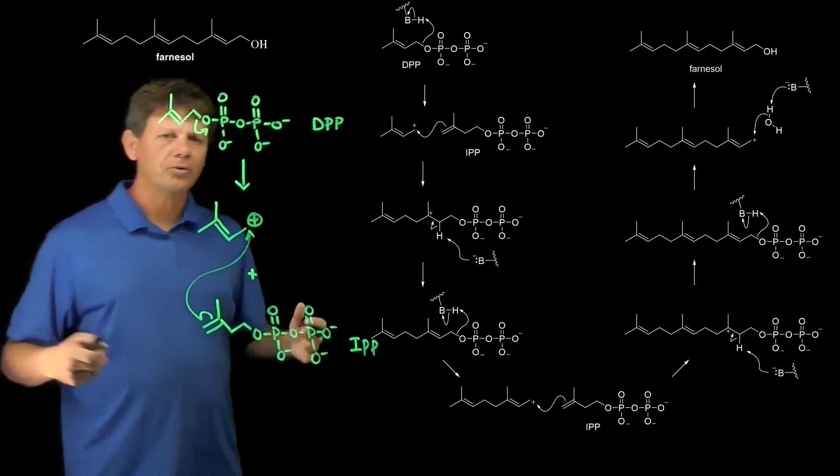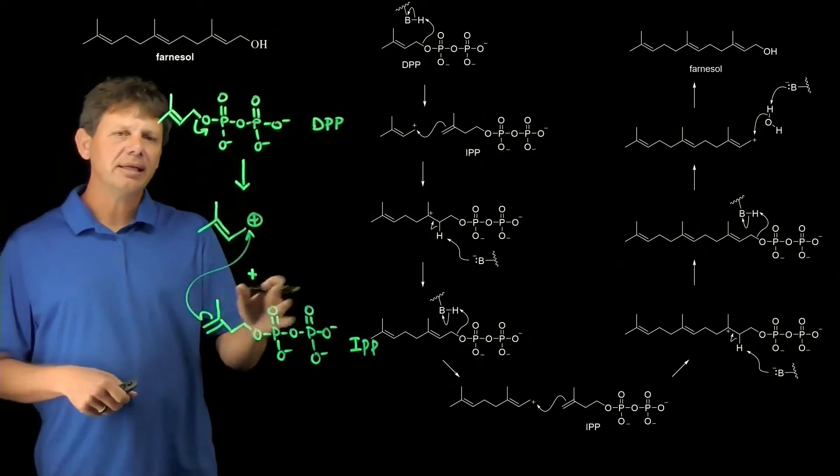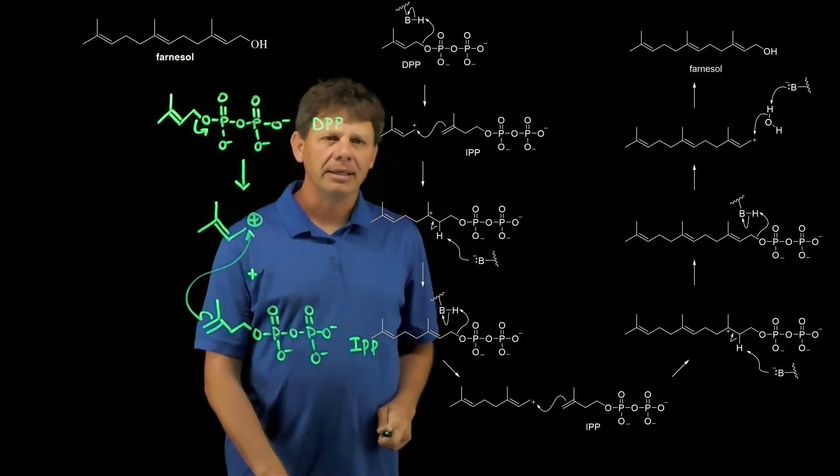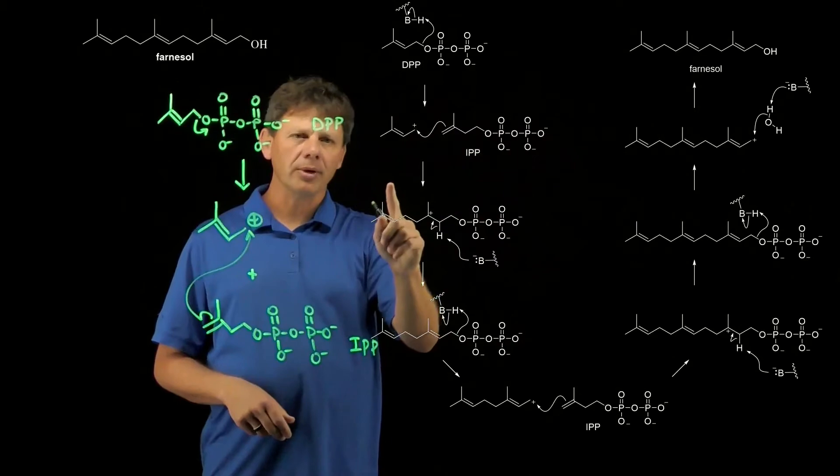Let's look at the whole scheme then and show how what we've illustrated here is basically what's happening. So, in the first step, we're making the stable carbocation.